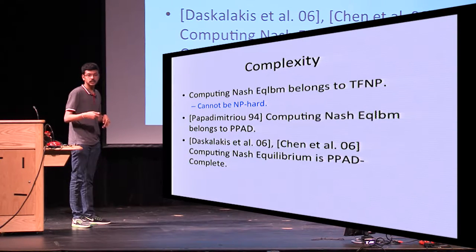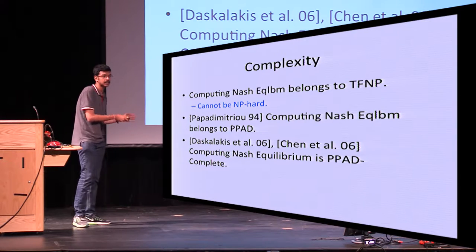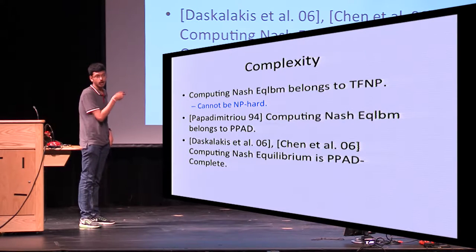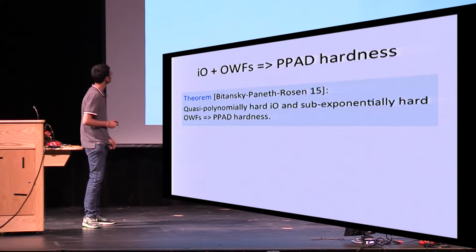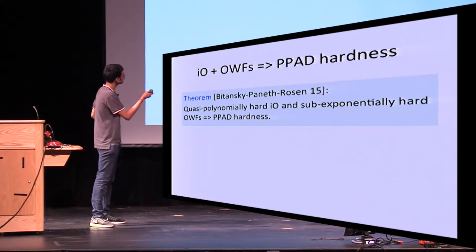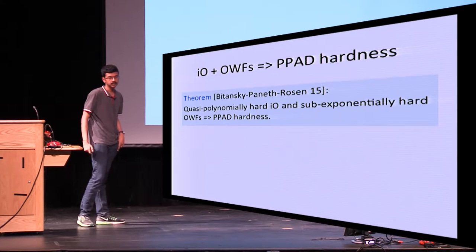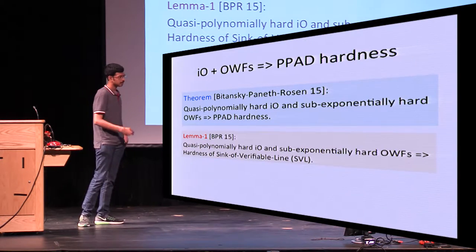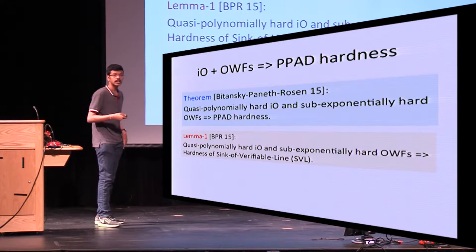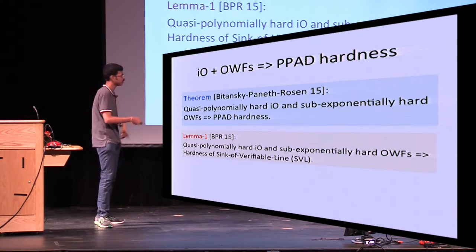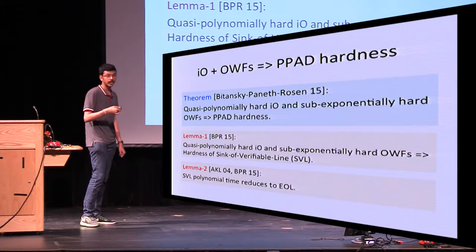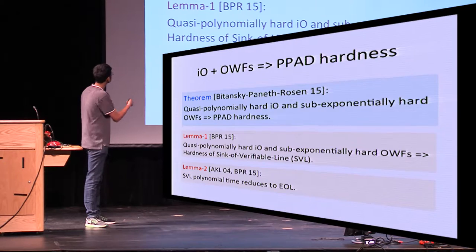From some superclasses of PPAD, cryptographic assumptions like factoring and collision-resistant hashing were used to prove their hardness. But such a result was not known for PPAD until very recently, when Bitansky, Paneth, and Rosen showed that quasi-polynomially hard IO and sub-exponentially hard one-way functions imply PPAD hardness. This is proved by two lemmas: the first constructs hard instances of a problem called Sink of Verifiable Line, and the second shows that SVL reduces in polynomial time to End of Line, the complete problem for PPAD.